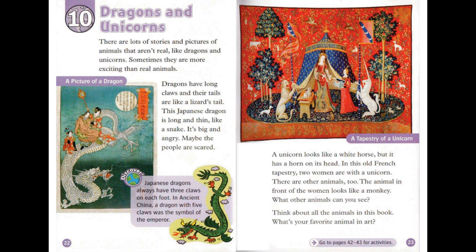A unicorn looks like a white horse, but it has a horn on its head. In this old French tapestry, two women are with a unicorn. There are other animals, too. The animal in front of the women looks like a monkey. What other animals can you see? Think about all the animals in this book. What's your favorite animal in art?